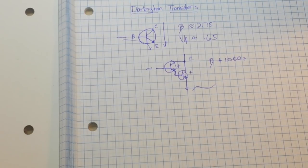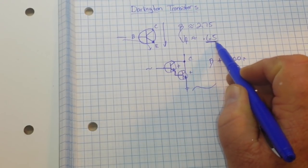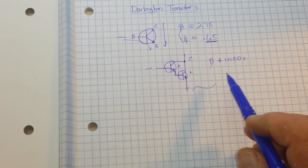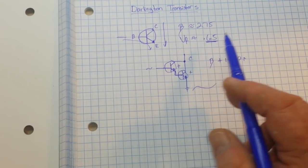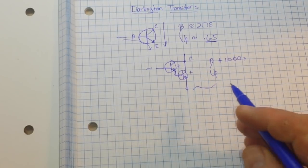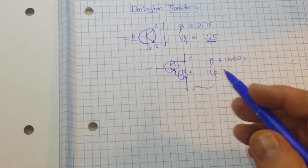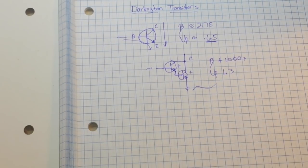But they do have disadvantages. Remember we said the diode drop of the single silicon junction is 0.65 volts? Well, the forward voltage of your Darlington is going to be generally around 1.3 volts.